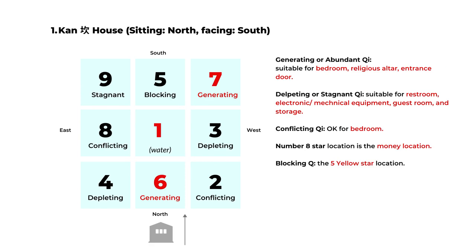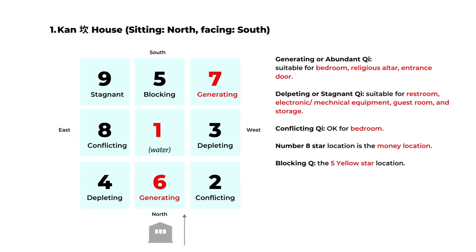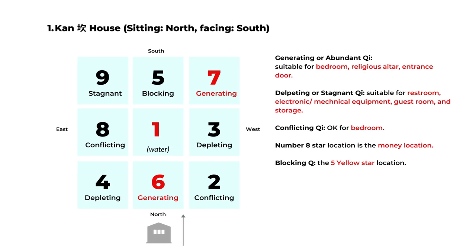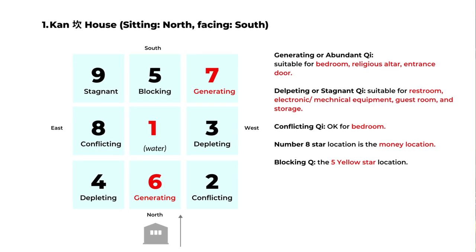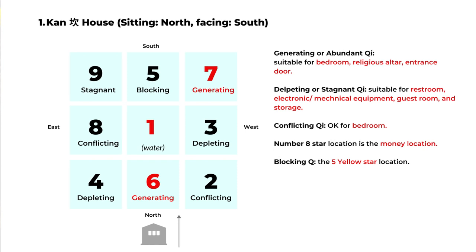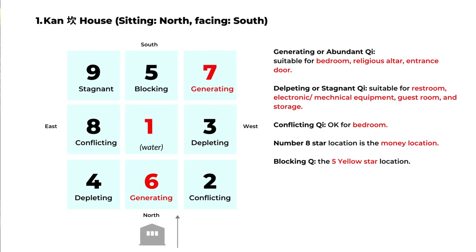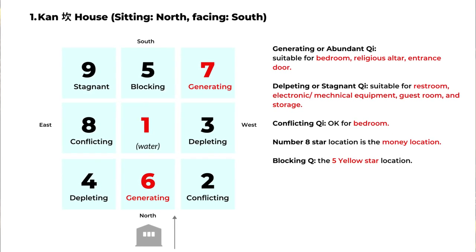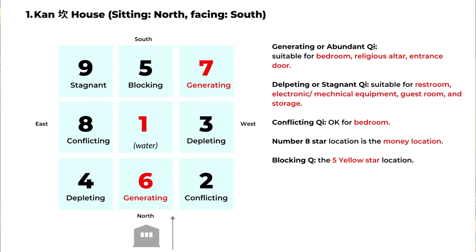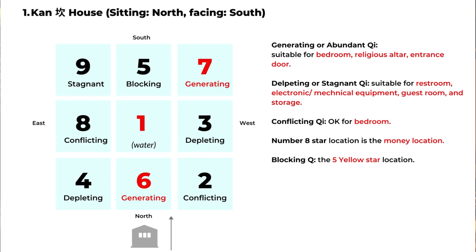Now we'll start with the Kan house. That's when the house is sitting on the north and facing south, and the number one is in the center. Number one is a water element. Depending on the five element relationship, it creates different types of energy in different corners. For the auspicious five element relationship, it creates generating or abundant Qi. For the inauspicious relationship, it can create depleting Qi or stagnant Qi. And some five element relationships will create conflicting Qi or blocking Qi. This is an energy map based on your house direction and you can set up your feng shui according to the chart.